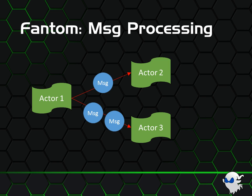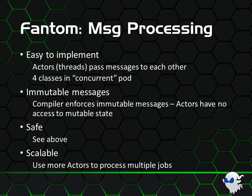By comparison, Fantom employs an actor framework and the message processing model. Here, threads — also known as actors — send messages to each other. These messages are just instances of Fantom classes, but not just any classes: immutable classes. This means the message content cannot change, hence we don't have the mutable state conundrum that Java has. Better yet, it's not even possible to compile a Fantom program whereby different threads have access to the same bit of data. Therefore, when it comes to concurrency, Fantom as a language is inherently safe. It only takes four classes in the Fantom concurrent pod, and the compiler forces the use of immutable message classes between actors, which makes it safer and less prone to errors.